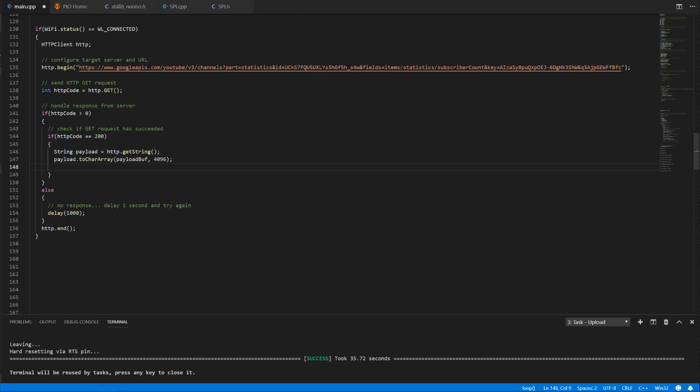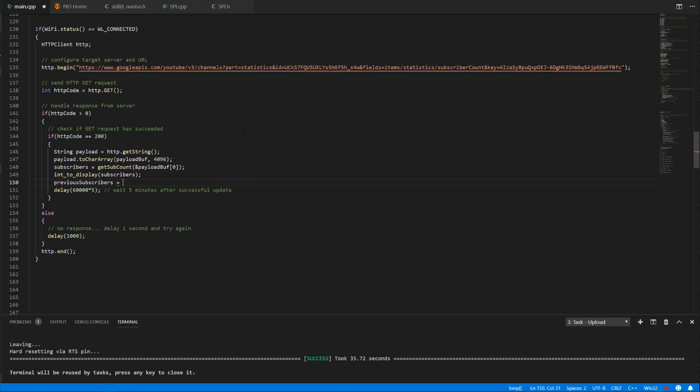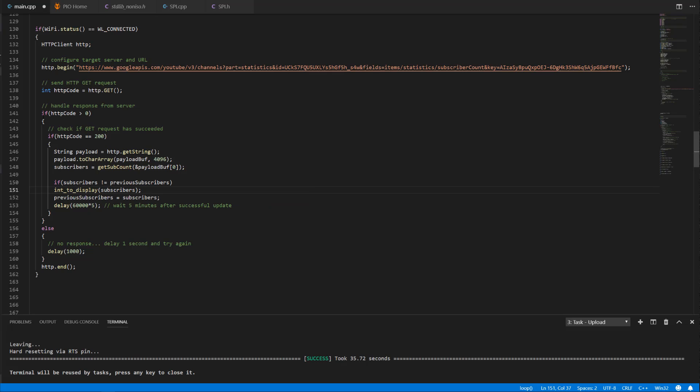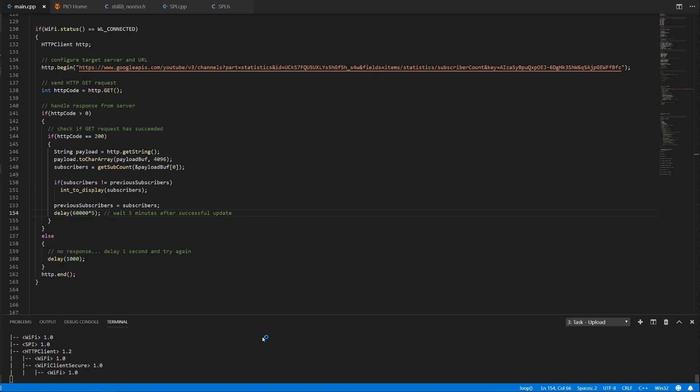Going back to the GET request, I'll call the function that I just wrote and store the value in a local variable. This value will then get sent to the display by passing it to a function that I built called intToDisplay. Once the value is sent, the ESP32 will hang for five minutes and then the process will repeat. One last step to make this code a little more robust is to only update the display if the subscriber count value has changed. In order to do this, I'll create another variable called previousSubscribers to store the previous count. This way, when a new count is obtained, it can be compared to the old count and only update the display if they are not equivalent. That should do it. Let's upload the code and see if it works.